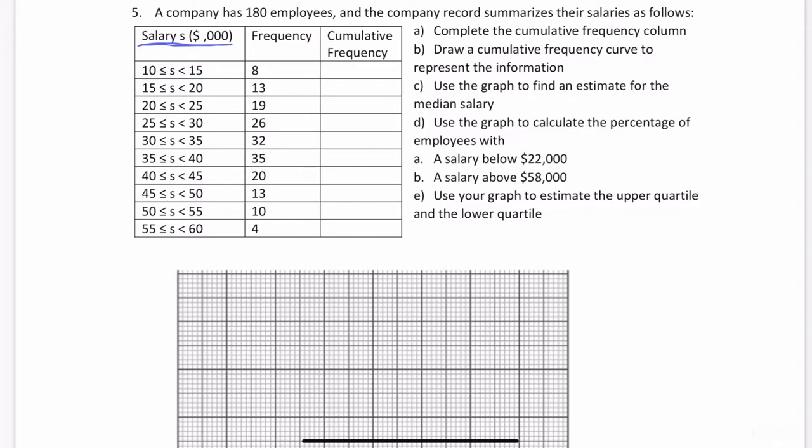Before we can create a cumulative frequency curve, we need to actually find the cumulative frequencies. That is by far one of the biggest mistakes I see students make all the time. If you're being asked to create a cumulative frequency curve or ogive, O-G-I-V-E, then you need to create a cumulative frequency column. In this case, the space is here for us, and they're asking us in part A to complete this cumulative frequency column.